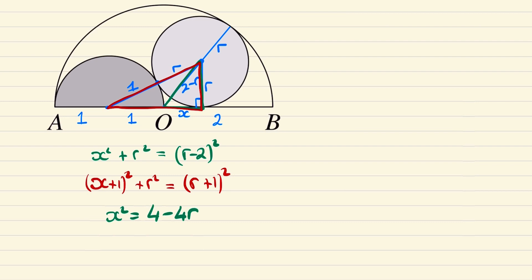And the equation in red can be written as x squared plus 2x is equal to 2r, and so if we rewrite this equation as 4r is equal to 4 minus x squared and this one here as 2x squared plus 4x is equal to 4r.